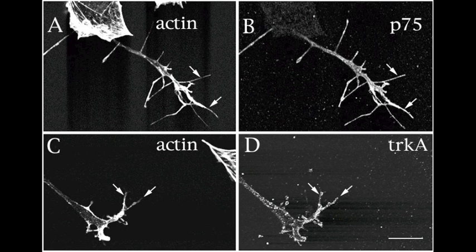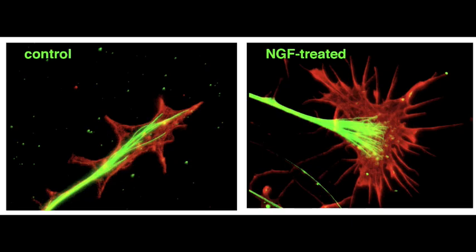Filopodia detect NGF on the bead with two receptor proteins, TrkA and p75, which cover growth cone surfaces. Cytoplasmic signals from these receptors stimulate actin polymerization.